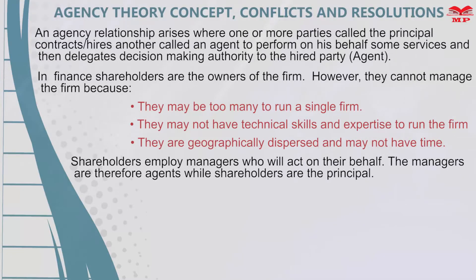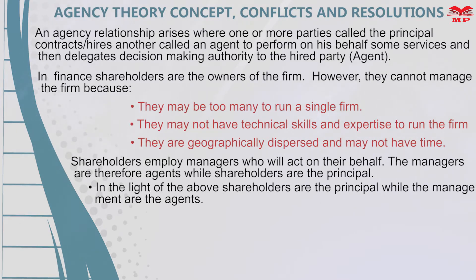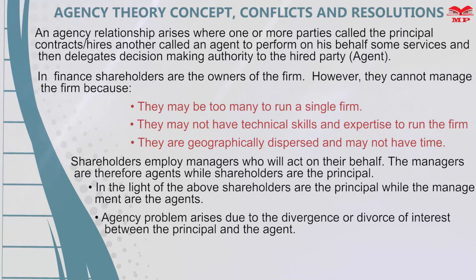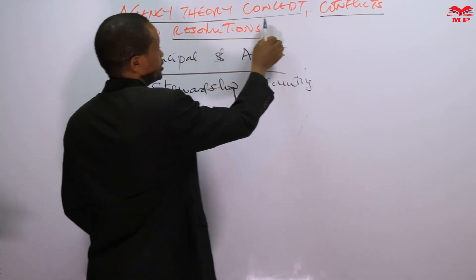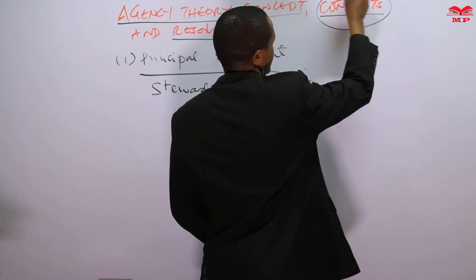The shareholders employ managers who will act on their behalf. Shareholders are the principal while the managers are the agents. An agency problem arises due to the divergence or divorce of interest between the directors and the shareholders — that is, between the principal and the agent. These conflicts are what we refer to as agency problems.